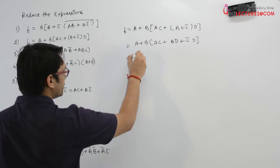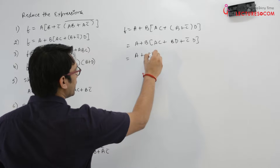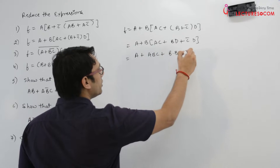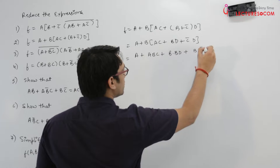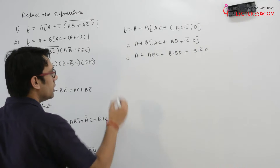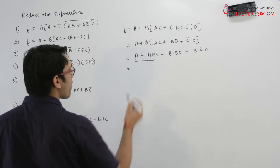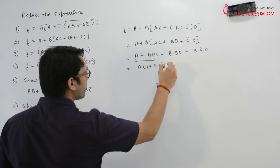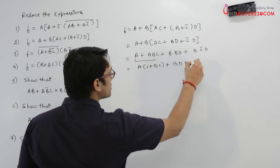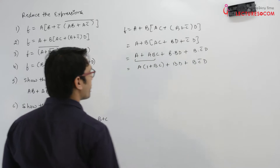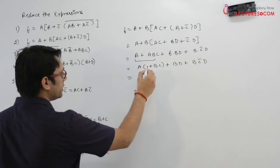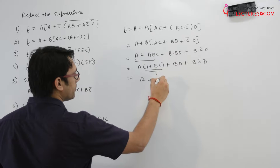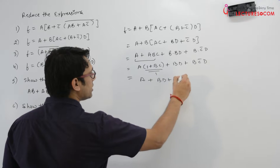Again, try to open the brackets: a + abc + b·bd + b·c'd. Now you can take a as common between these two terms, so you will get a + bc + bd + bc'd. Here this expression abc simplifies — taking a as common, the a·bc becomes a, so it is a + bd + bc'd.